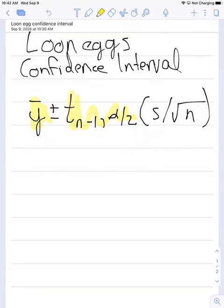We find this value from the t table or from software, and then we need to know what the standard error is, or the standard deviation divided by the square root of the number of samples we have.